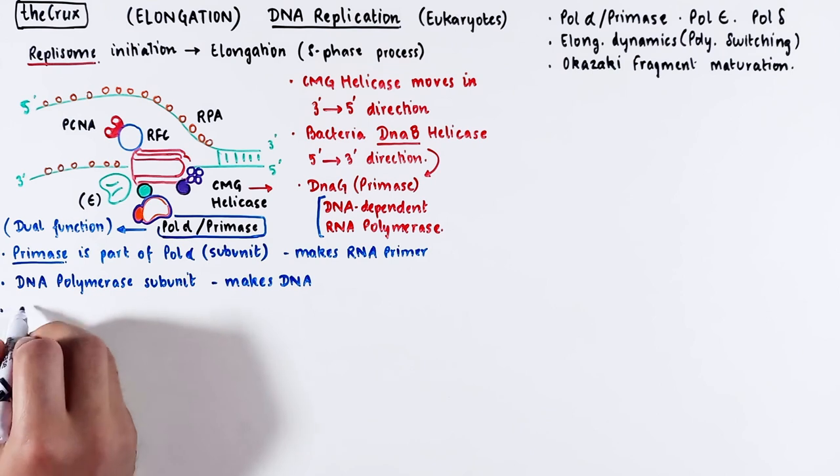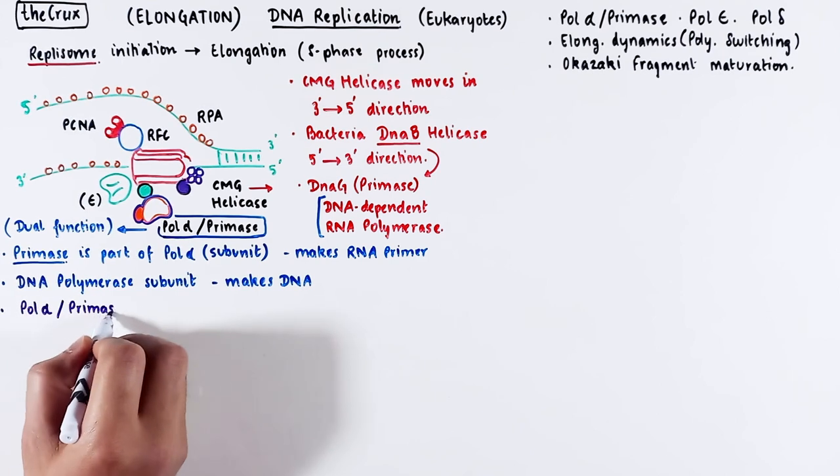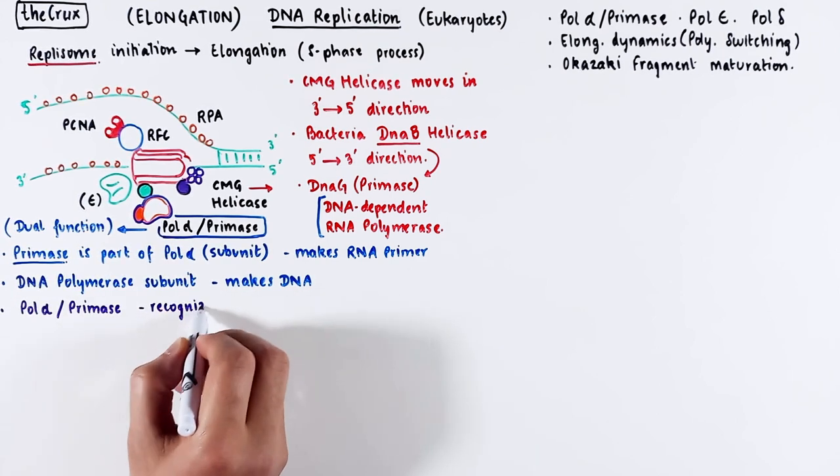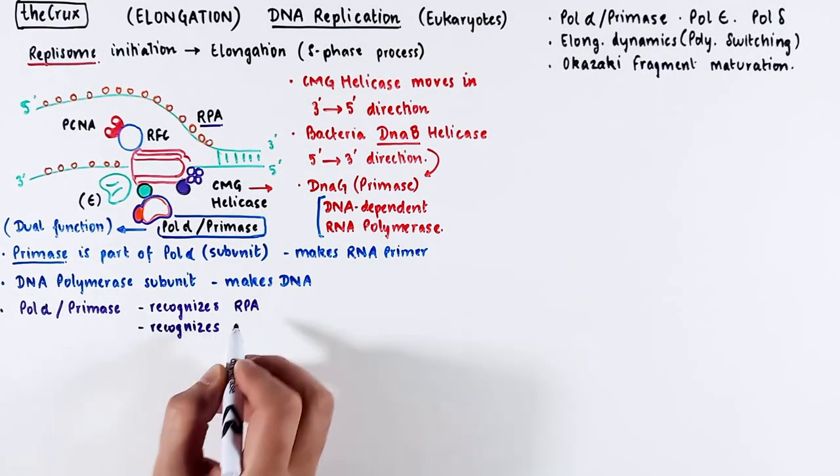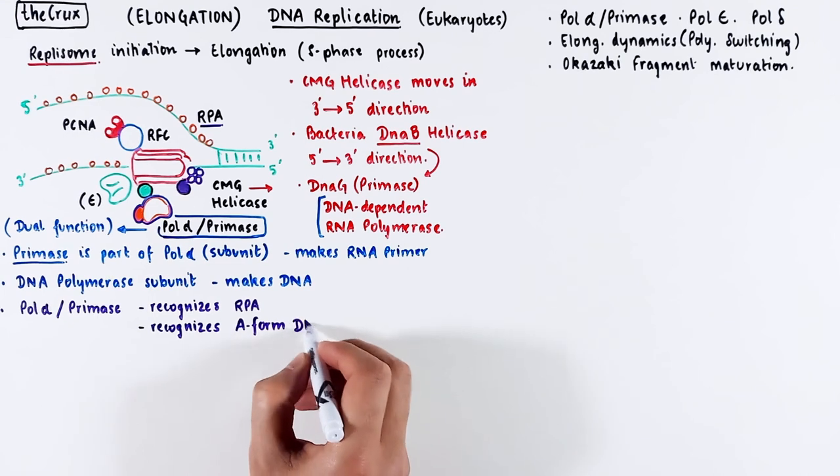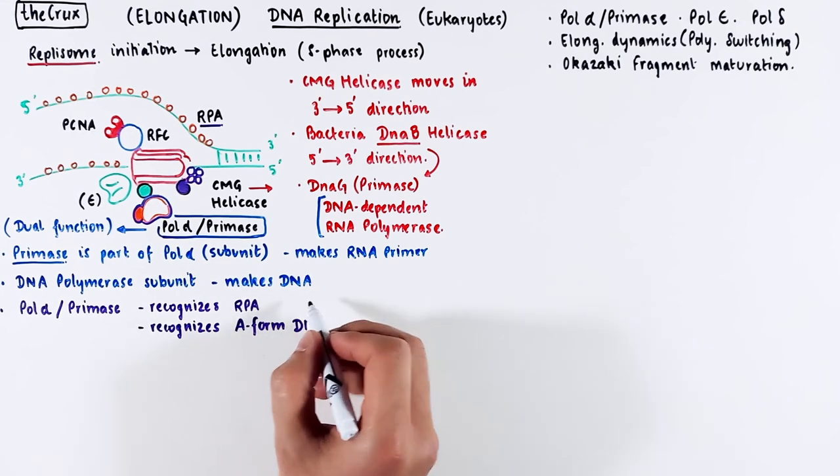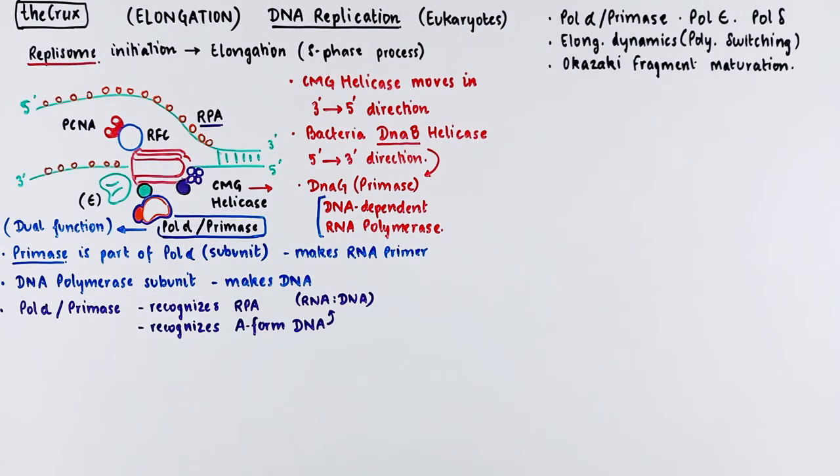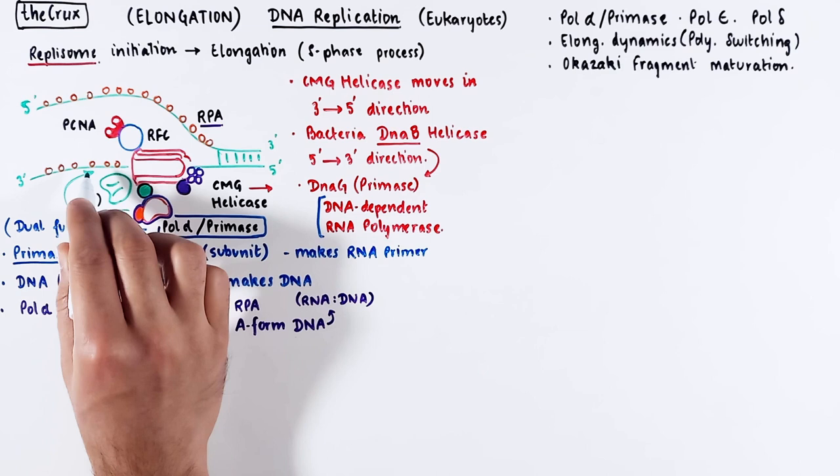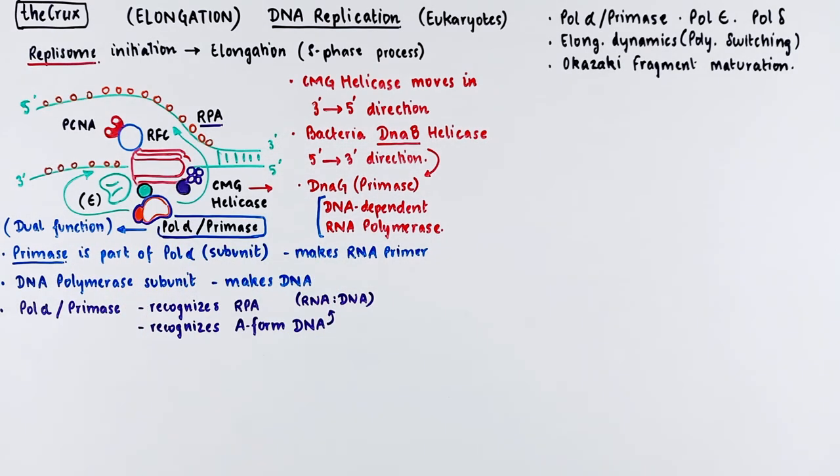Now to understand how it works, we have to take a note that pol alpha primase is attracted to the single strand DNA binding protein RPA. The pol alpha specifically also likes to bind the A form of DNA. This form is found in the RNA-DNA duplexes. We have seen this in the prokaryotic replication video. First, the pol alpha gets to the single stranded DNA. Now we can start visualizing how it all plays out one step at a time.